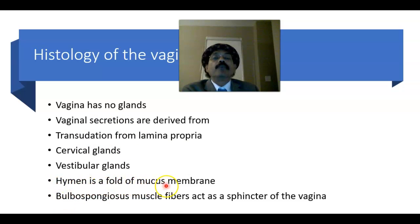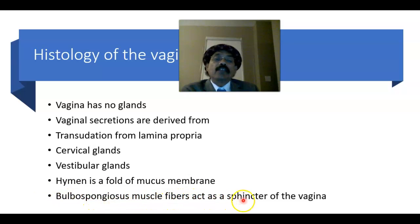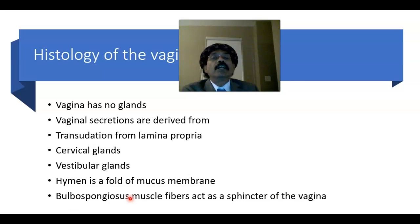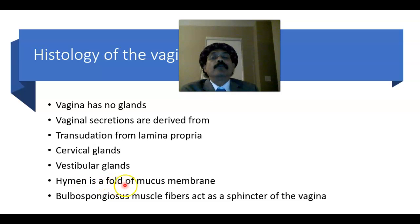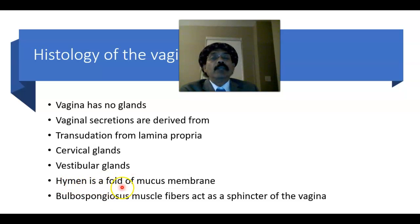The hymen is a fold of mucous membrane present at the beginning of the vagina. The bulbospongiosus muscle acts as a sphincter of the vagina — this is a skeletal muscle with a few fibers present in the lower part. The hymen is ruptured due to sexual activity or other reasons, and remnants may remain at the beginning of the vagina.